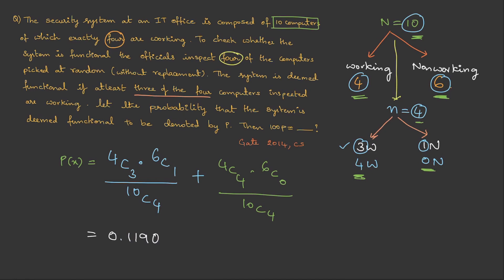But, they did not ask the probability. They are asking 100 times of the probability. Therefore, 100 times of P is 11.9. This is the answer.